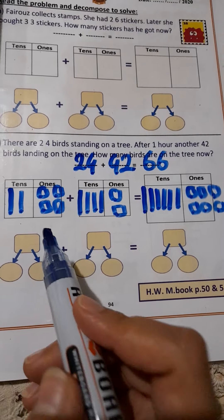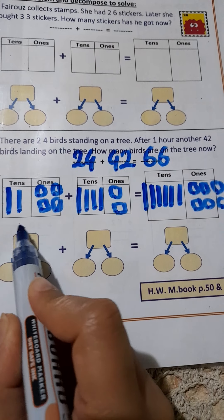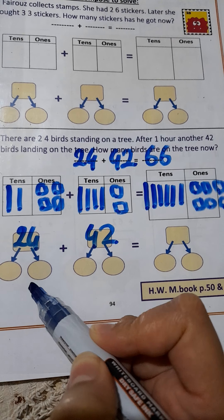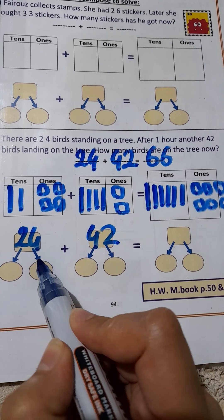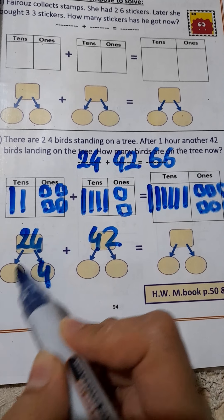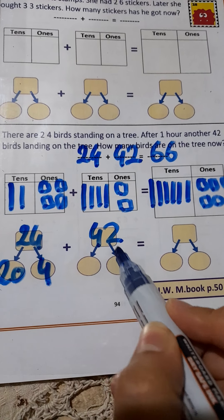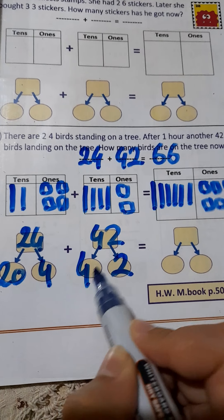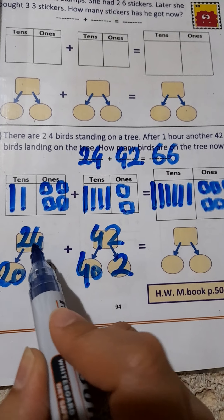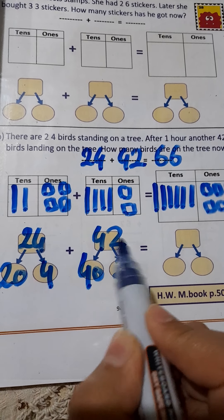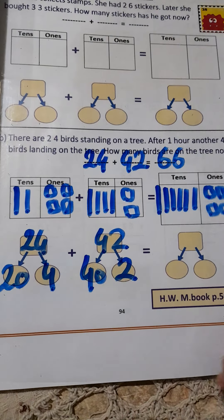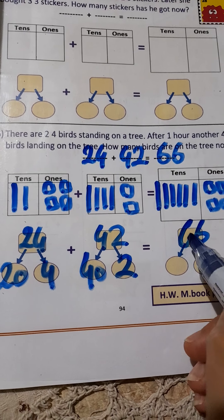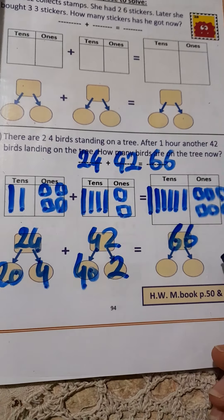Now, I will use decomposing to find the result. 24 plus 42. The value of 4 is 4. The value of 2 is 20. The value of 2 is 2. The value of 4 is 40. Now, add ones plus ones: 4 plus 2 equals 6. Move to tens: 2 plus 4 equals 6, which is 60.